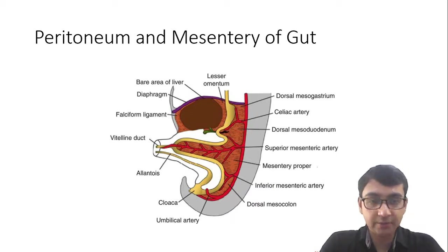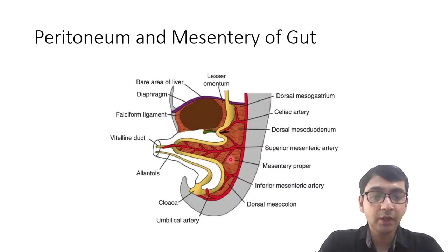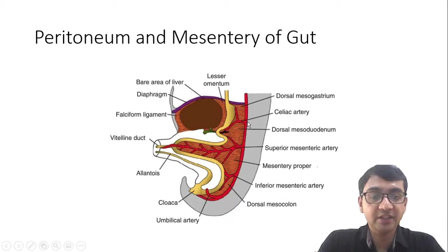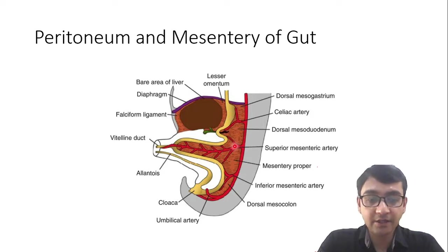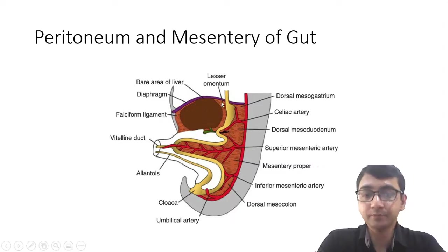Embryologically, in the beginning of fetal life, the whole GIT had a dorsal mesentery. From the stomach up to the first part of the duodenum it was known as the dorsal mesogastrium. From the duodenum all the way to the transverse colon — the midgut — it was known as mesentery proper or mesentery of the small intestine, basically the ileum and jejunum. The large gut also had a dorsal mesentery. Each embryological part of the gut had its own blood supply: the celiac artery in the dorsal mesogastrium, the superior mesenteric artery in the mesentery proper, and the inferior mesenteric artery in the dorsal mesocolon.